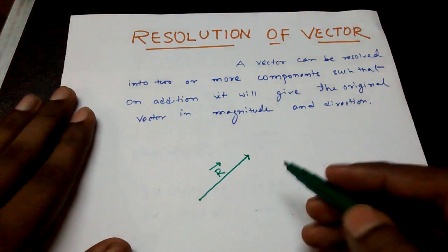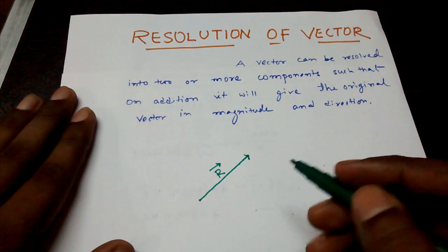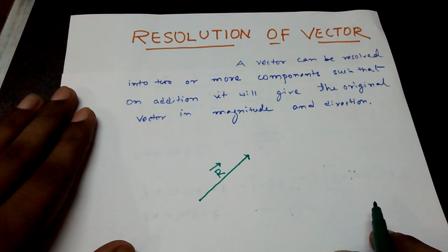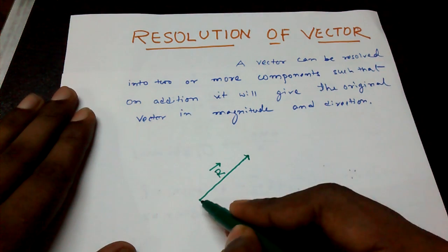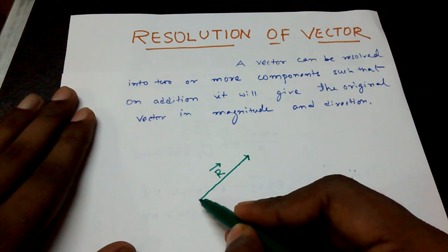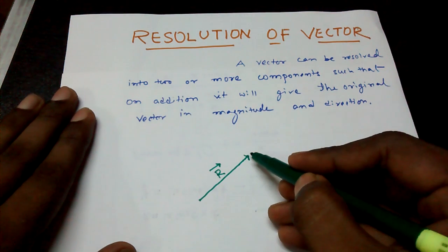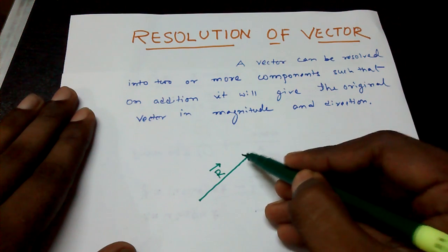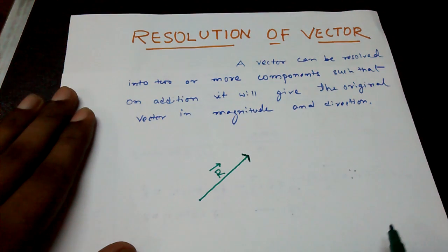Here I am taking a typical vector R and I am resolving it into two perpendicular components. This is the tail of the vector R and this is the tip of the vector R. Actually this arrow head is considered a tip.